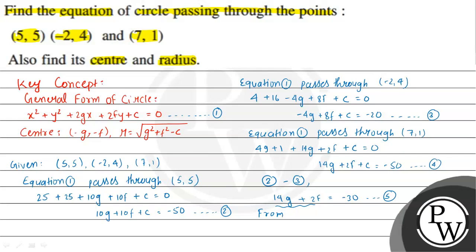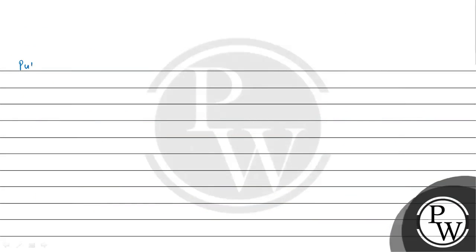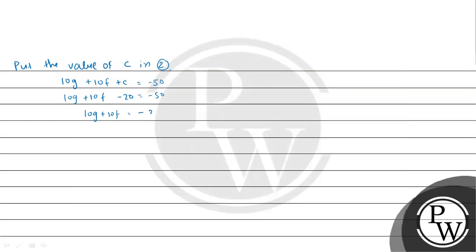From equation 5 we have 14g + 2f = -30. From equation 4, 14g + 2f + c = -50. Replacing 14g + 2f with -30, we get -30 + c = -50, so c = -20. Substituting the value of c into equation 2: 10g + 10f - 20 = -50, giving 10g + 10f = -30, so g + f = -3. This is equation 6.